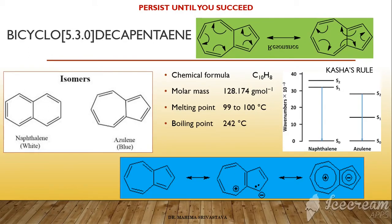Moving further in the description of azulene, we have already seen that it is an aromatic bicyclic isomer of naphthalene. It is also a non-alternate hydrocarbon. Non-alternate hydrocarbons invariably feature at least one ring constructed with an odd number of carbon atoms — both rings of azulene are constructed with odd numbers of carbon atoms. The counterpart is an alternate hydrocarbon, which is any conjugated hydrocarbon system that does not possess an odd-membered ring. Azulene is also a non-benzenoid hydrocarbon.